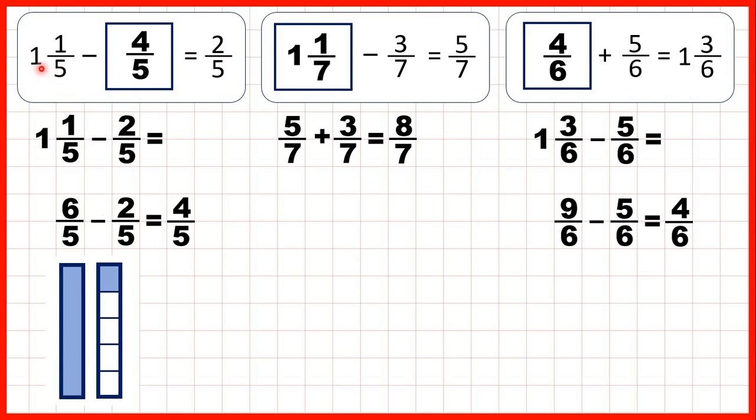So we knew that we started with one and one-fifth, then we subtracted something to get two-fifths as our answer. What did we subtract? Well, it's the one, two, three, four-fifths that we can now see in blue on these fraction bars.